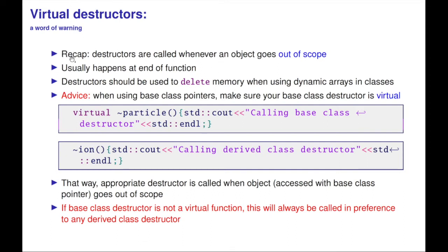We had a virtual function, but let's see whether we want to make a destructor virtual—and the answer is yes. Destructors are called when an object goes out of scope, usually at the end of a function. Destructors should be used to delete memory when using dynamic arrays in classes. The standard advice is: when using base class pointers, make sure your base class destructor is virtual, because that means it's going to call the right destructor for the object we have when the object goes out of scope. If the base class destructor is not a virtual function, the base class destructor will always be called in preference to any derived class destructor. Since a derived class usually contains more data, that doesn't strike me as a good idea.